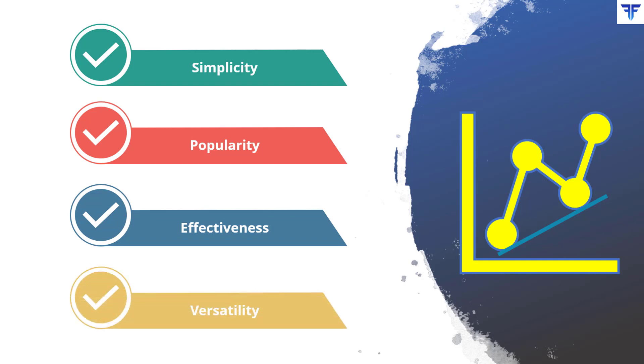A trendline can be drawn on all types of charts — be it the line chart, bar chart, candle chart, point and figure chart, Heiken Ashi chart, etc.